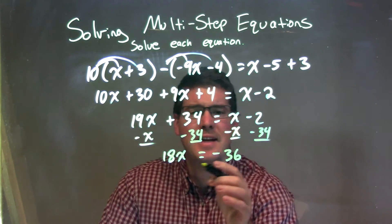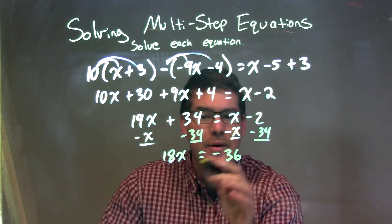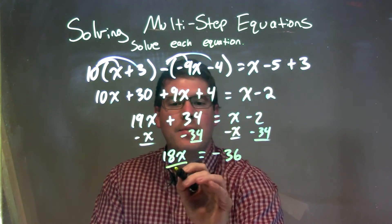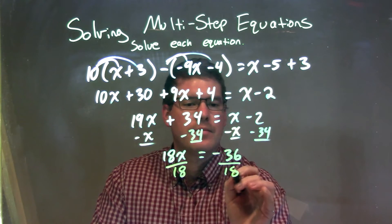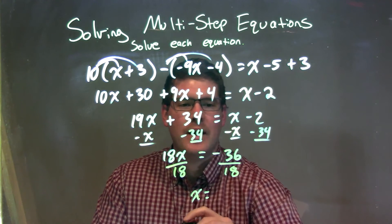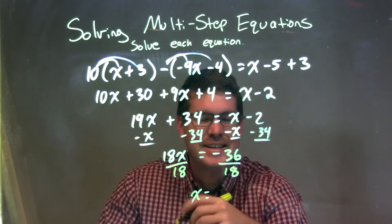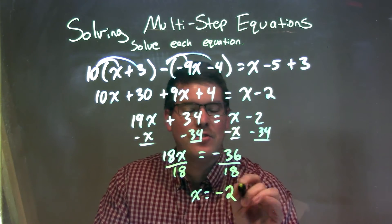Now we have 18x equals negative 36. I want to get x by itself, so I divide both sides by 18, leaving x by itself equal to negative 36 divided by 18, which is negative 2.